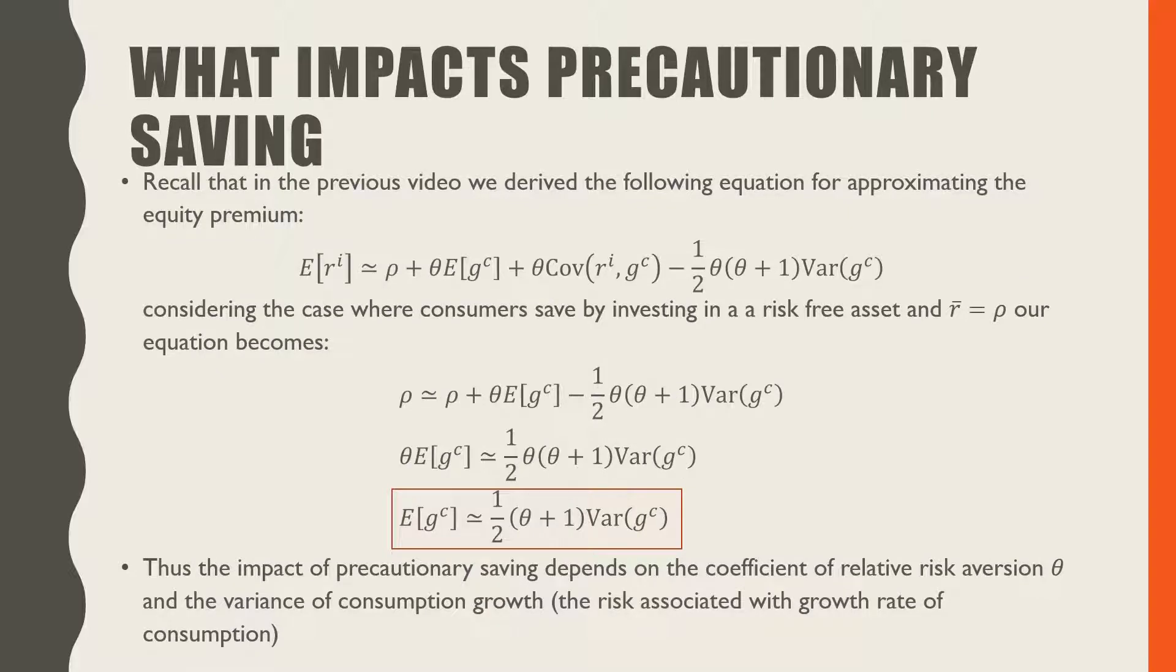In terms of the impact of precautionary saving, recall that in our previous video, we derived the equation for approximating the equity premium. Considering the case where our consumers are saving by investing in a risk-free asset and that our consumer's subjective discount factor is equal to the rate of risk-free saving, our equation becomes the following.